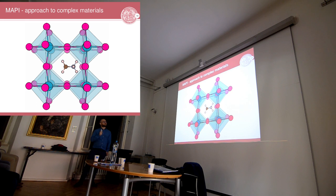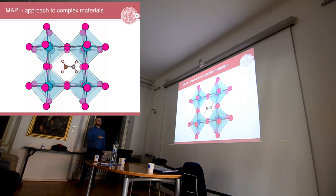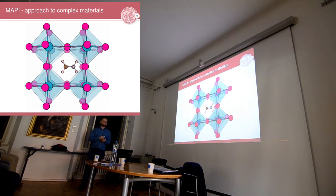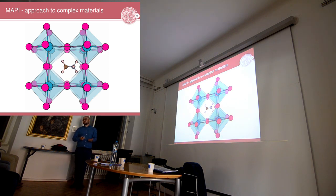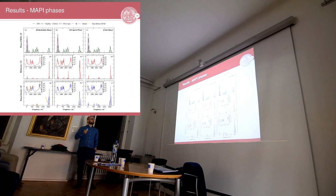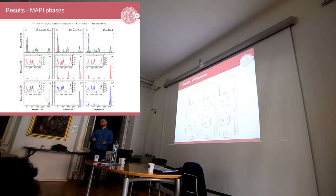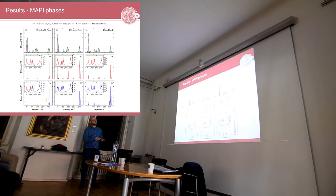Here is a popular example — perovskite-type materials, one of the most studied material classes in the last five years. There is a cage made of octahedra that are rigid and can rotate, forming different patterns, with a molecule in the middle that moves and rattles. This material is very sensitive to temperature and humidity, making experimental characterization very challenging. But if you want to do simulation, it's much easier. We considered three different structural phases — three different orientations of these cages — and we can predict infrared spectroscopy and Raman spectroscopy, comparing against the first available experimental data.